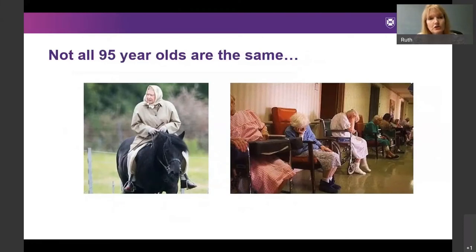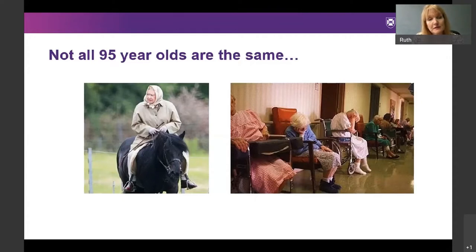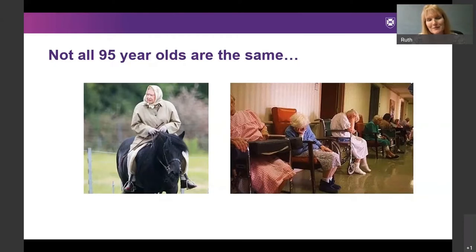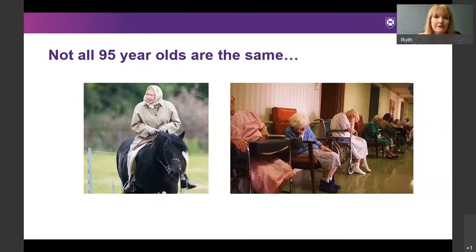Frailty enables us to understand differences in health status between people of the same chronological age. I've used the Queen as an example: when she was 95 she was still able to ride a horse, which requires high levels of coordination, flexibility, agility, muscle strength, the integration of visual stimuli, and cognitive control — whereas many 95-year-olds have started to develop deficits in some of those domains.